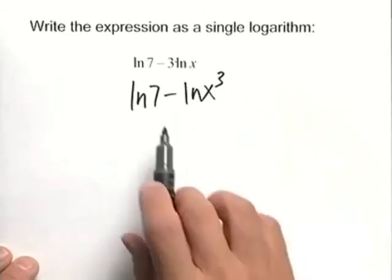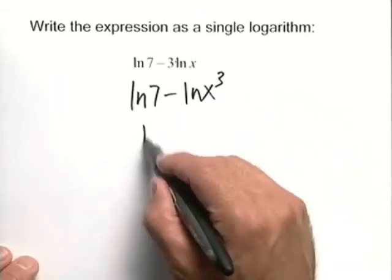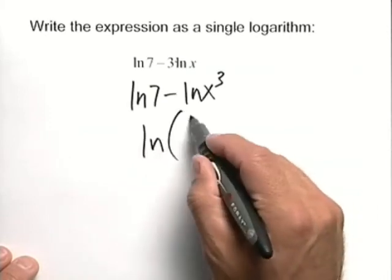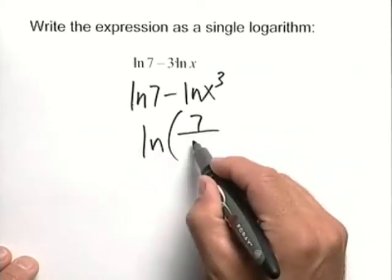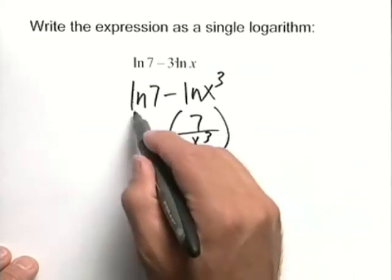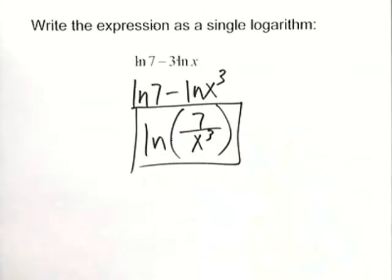Now we have the subtraction of two logarithms, so this can then be written as a natural log of 7 divided by x cubed. So we've taken our original expression and written that as a single logarithm.